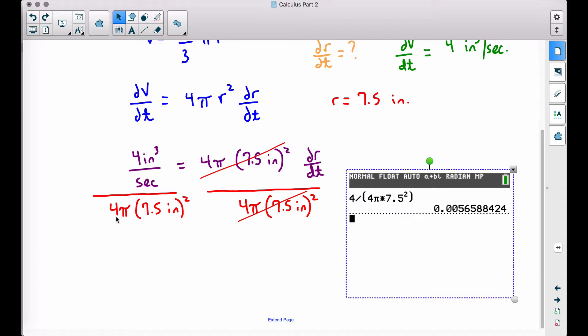That will cancel out the 4π times 7.5 inches squared over here on the right hand side. And when we divide the left hand side, we get this decimal right here. Now again, I would probably not round here. I want to round my final answer, and technically we're not quite done yet.